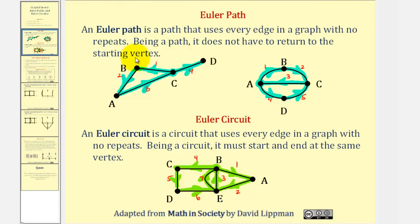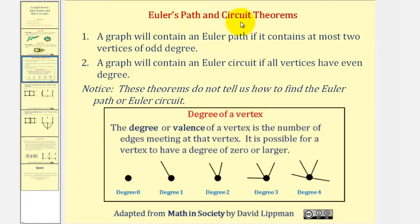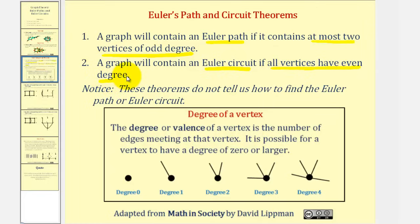Not all graphs have Euler paths and Euler circuits, which leads us to Euler's path and circuit theorems. A graph will contain an Euler path if it contains at most two vertices of odd degree. A graph will contain an Euler circuit if all vertices have even degree. These theorems tell us if one exists, not how to find it. Remember, the degree or valence of a vertex is the number of edges meeting at that vertex.